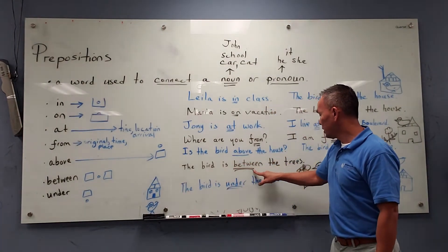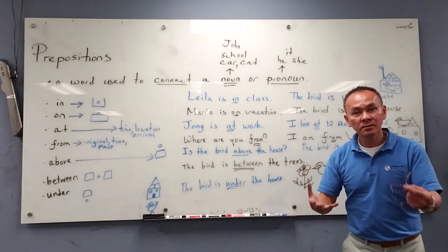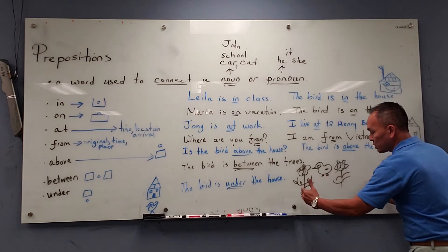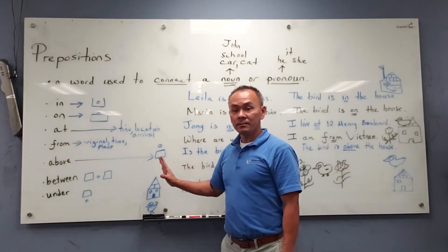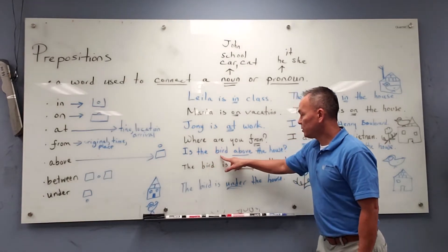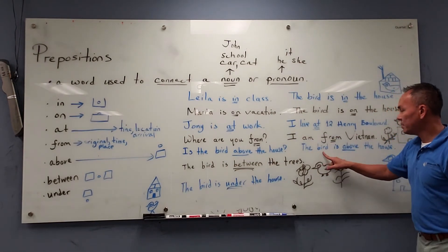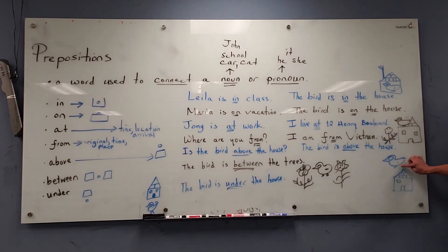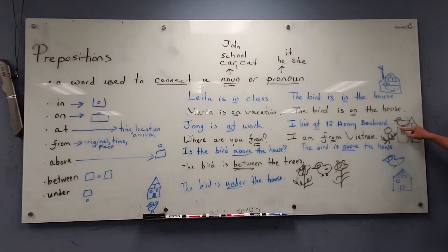The bird is between the trees. Where is the bird? You have one tree, and one tree — you have two trees — and the bird is between the trees. Now, the bird is above the house. This is the bird; the bird is not touching the roof of the house. This is called the roof. But the bird is above. When the bird touches the roof, it's on. So above means not touching — on means touching.